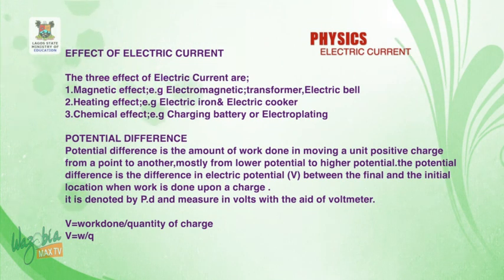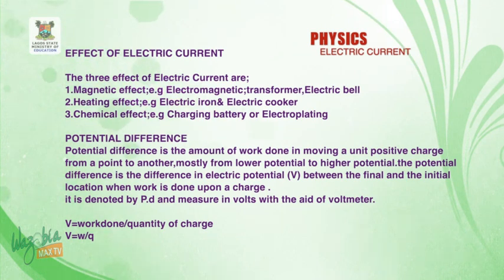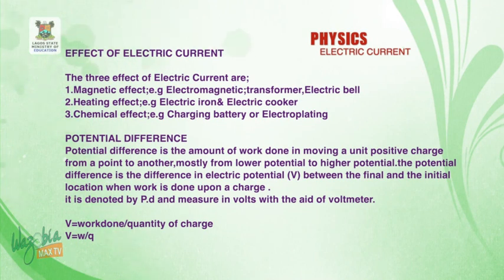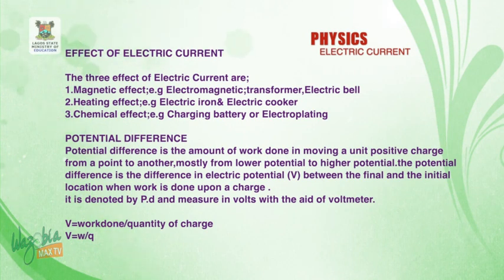Potential difference is measured in volts, and we measure it using an instrument called the voltmeter. The voltmeter is well calibrated. Voltage equals work done divided by the quantity of charge, so V = W/Q. We can also say that work done equals voltage times quantity of charge: W = V × Q.